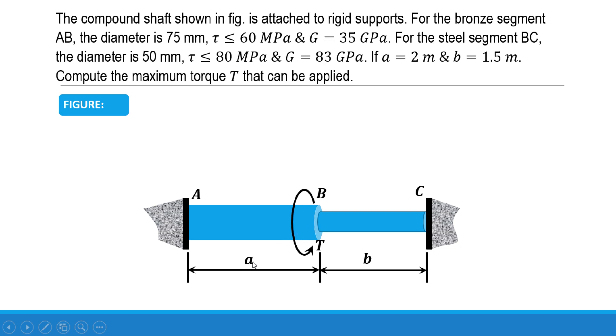The value of a is given as 2 meters and b is given as 1.5 meters. We have to find out the maximum torque T that can be applied to this combination.